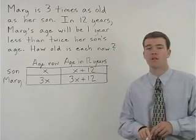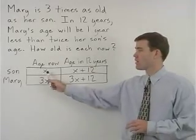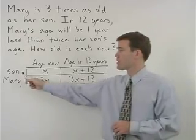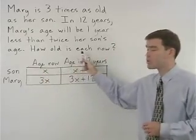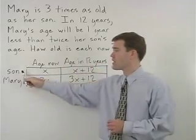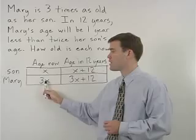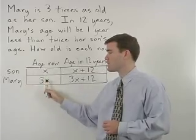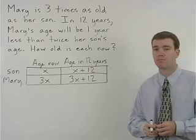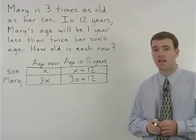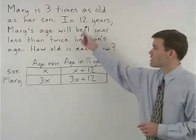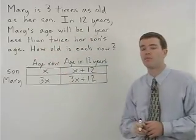Our goal in this problem is to find the value of x because x represents the son's age now. And look at what the problem is asking: how old is each of them now? If we can find the son's age now, x, we can easily find Mary's age now, which is three x, and we have our answer. But in order to find x, we need to set up an equation, and to do that, we use the second sentence in the problem.